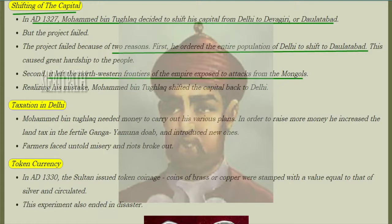This project failed due to two reasons. First, he ordered the entire population of Delhi to shift to Daulatabad, causing great difficulty to the people. Second, the move left the northwest frontiers of the empire exposed to Mongol attacks. He then realized his mistake and shifted the capital back to Delhi.